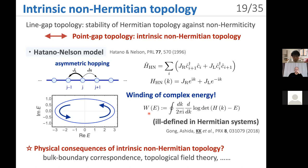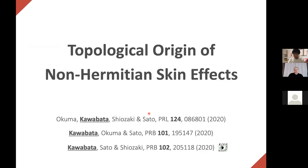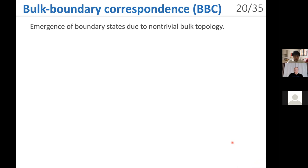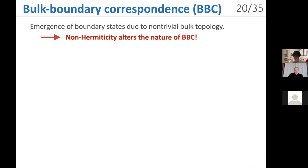The next question is: what are the physical consequences of intrinsic non-Hermitian topology? Since the topology is intrinsic to non-Hermitian systems, the corresponding physical phenomena should also be intrinsic. Let's consider bulk-boundary correspondence in topological field theory for intrinsic non-Hermitian topology. We need to consider bulk-boundary correspondence in non-Hermitian systems. The key phenomena are the non-Hermitian skin effects — a prime example of non-Hermitian topological phenomena. Bulk-boundary correspondence is the central principle of topological phases, predicting the emergence of anomalous boundary states due to non-trivial bulk topology. Notably, non-Hermiticity changes the nature of bulk-boundary correspondence.